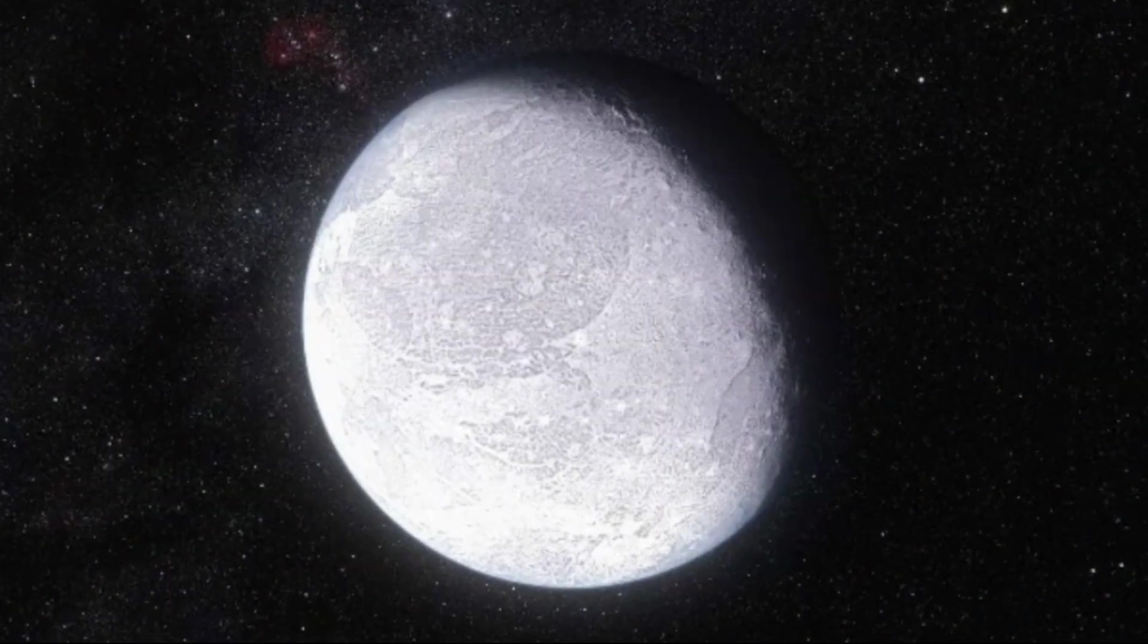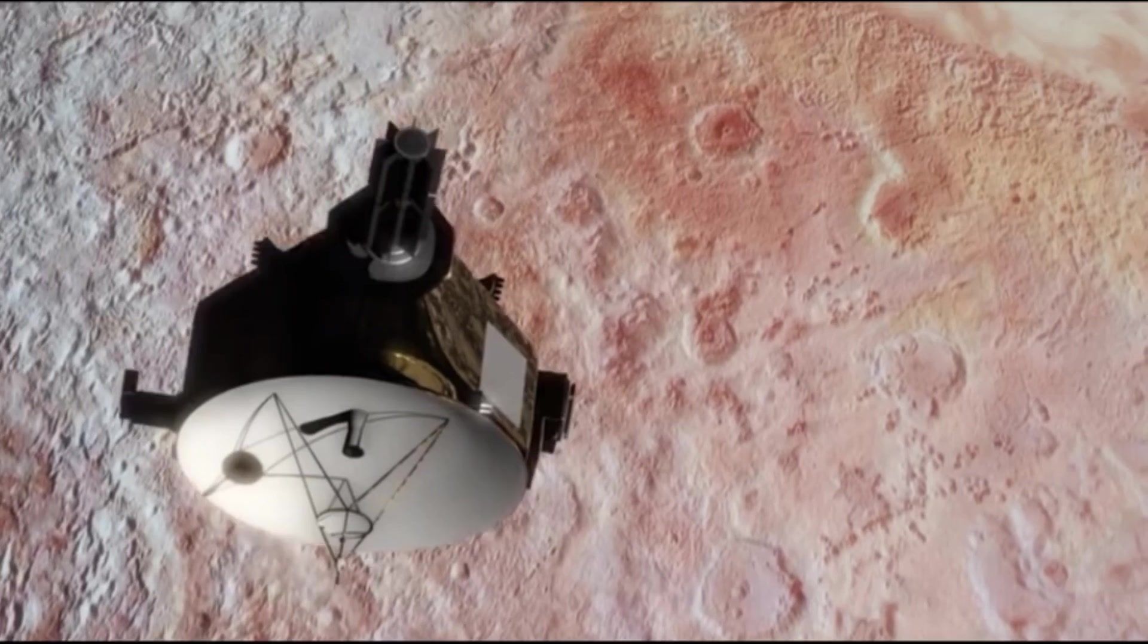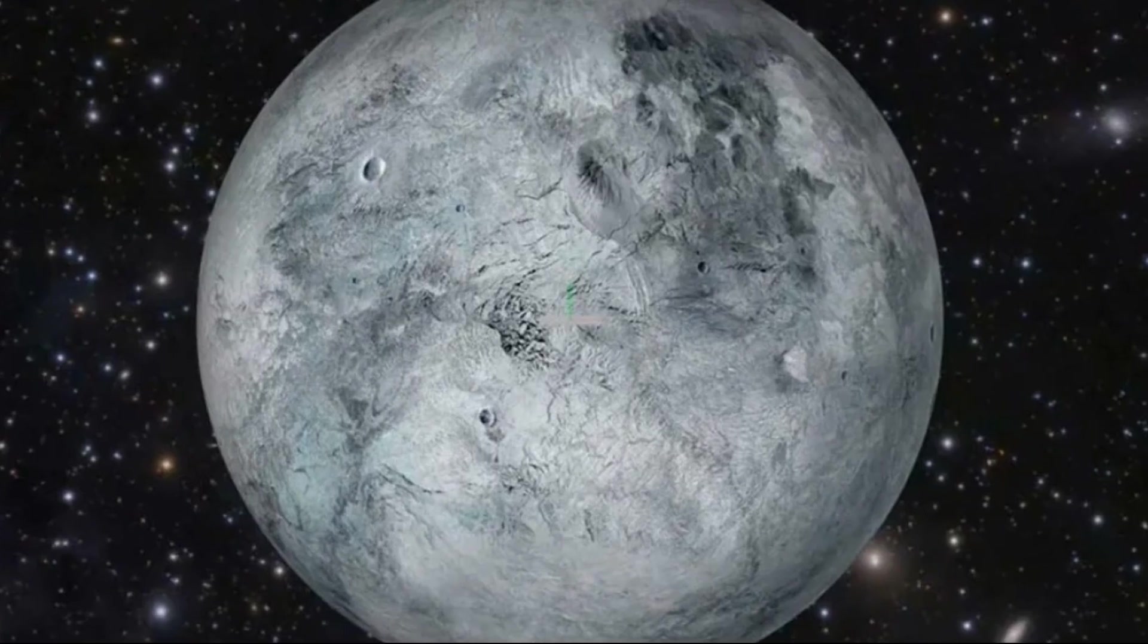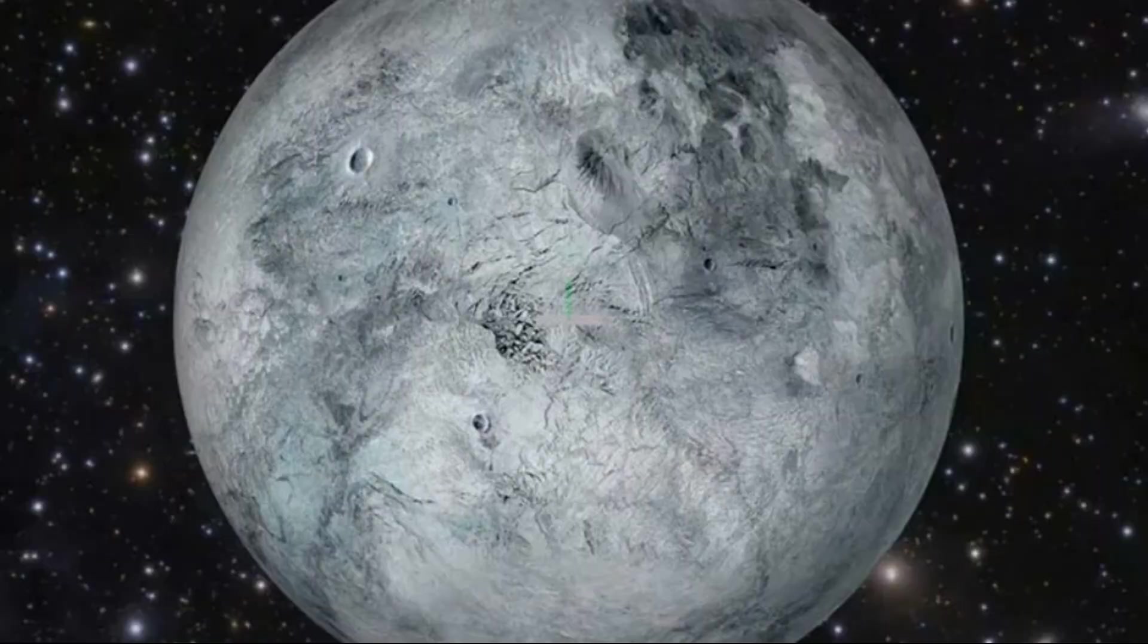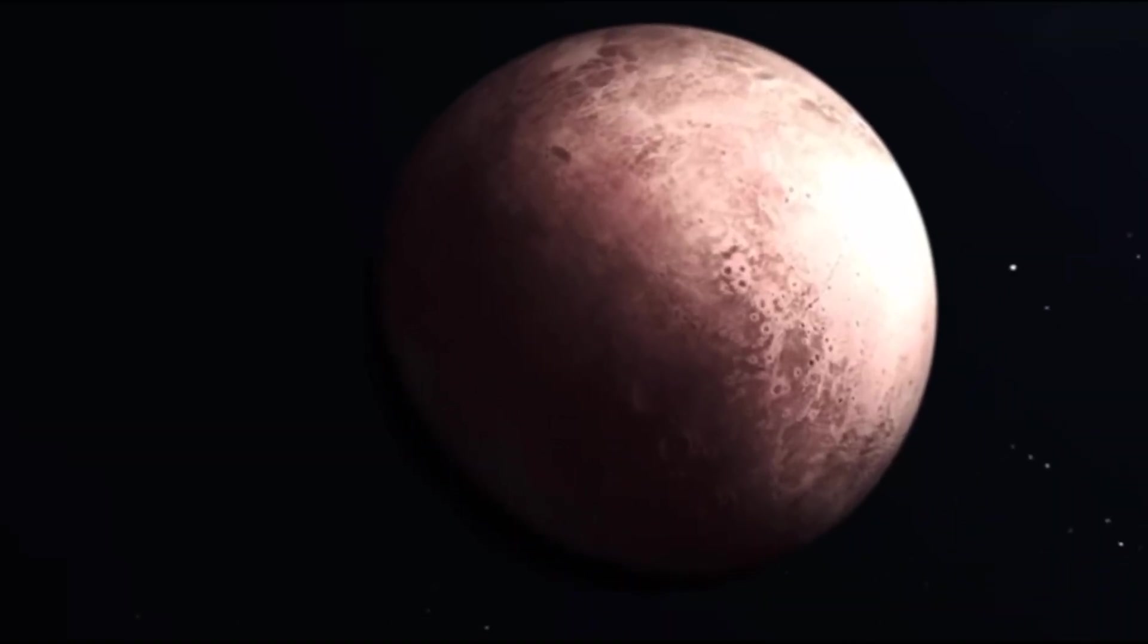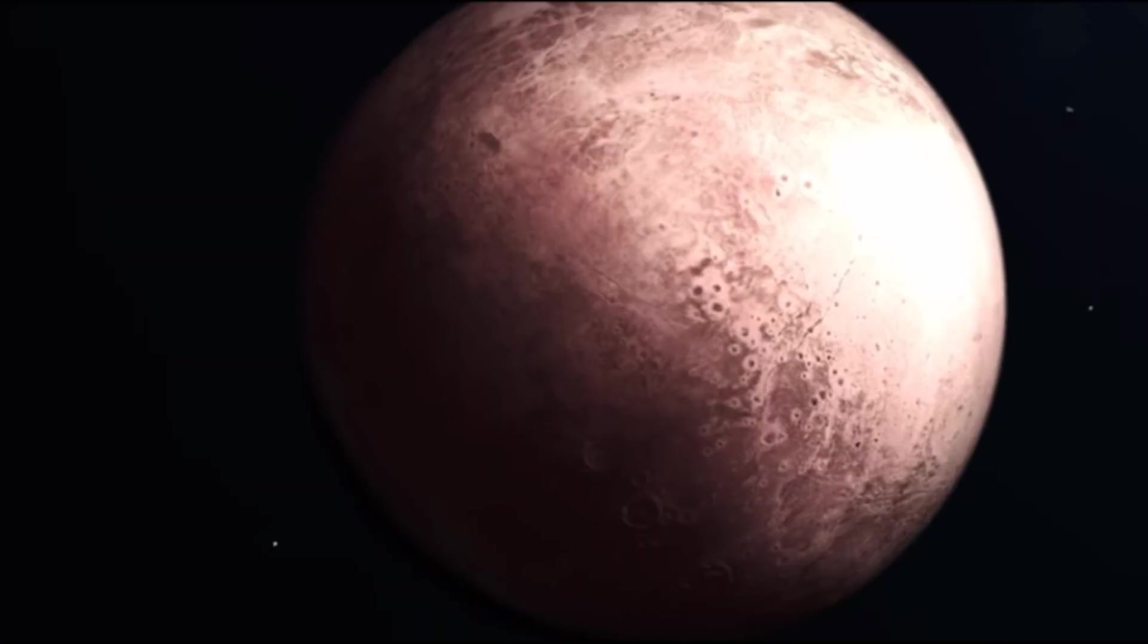After the discovery of Eris in 2005, an object practically comparable in size to Pluto, the issue became acute. It turns out that Eris then should also be considered the tenth planet. It was necessary to not only reconsider Pluto's status, but also to develop clear criteria for the concept of a planet in general. In 2006, the International Astronomical Union established stricter norms.